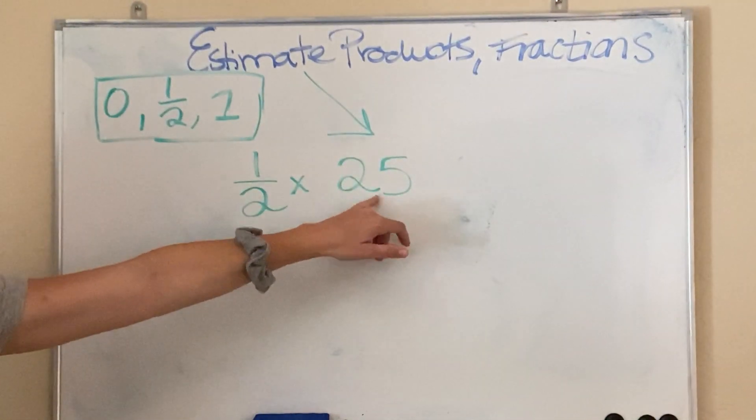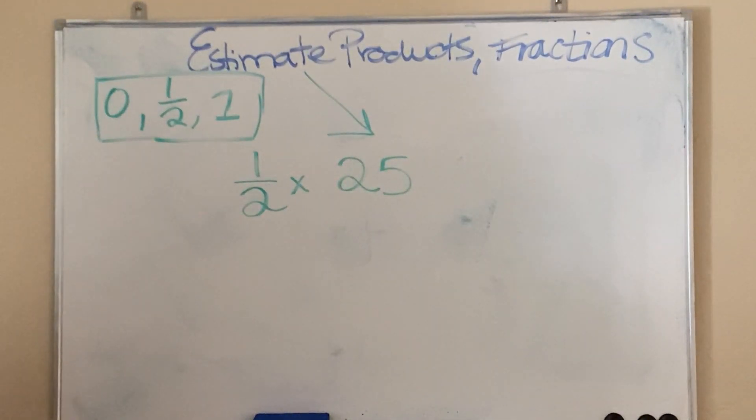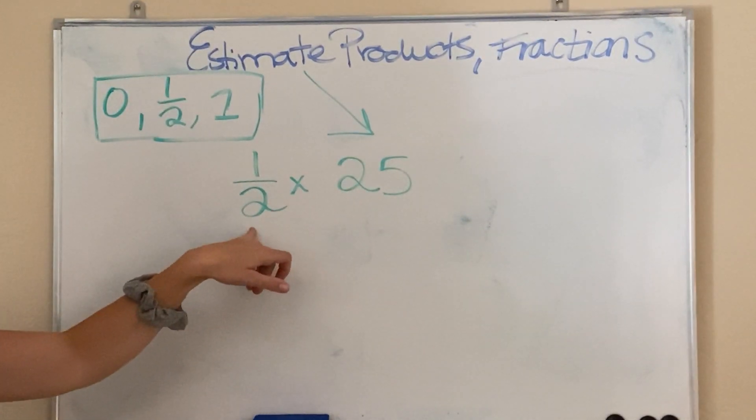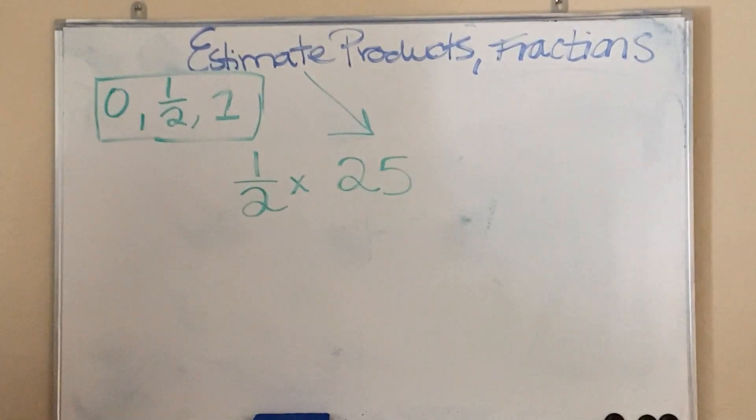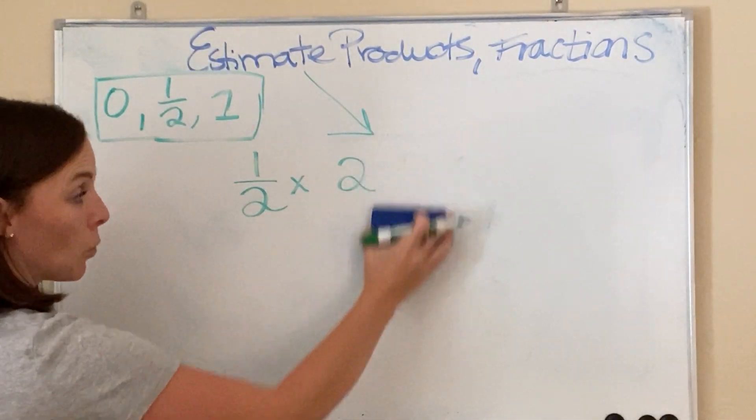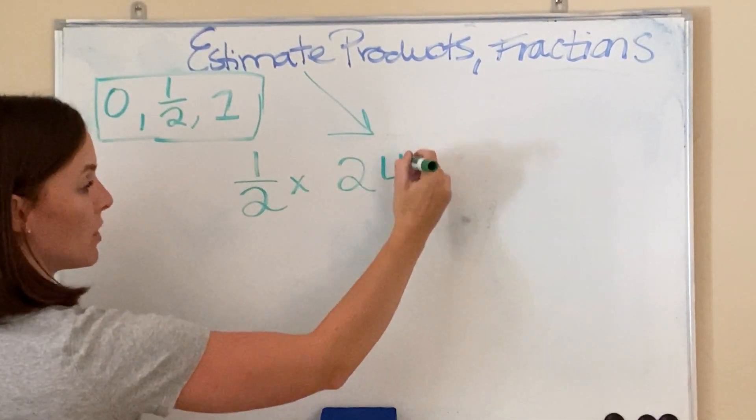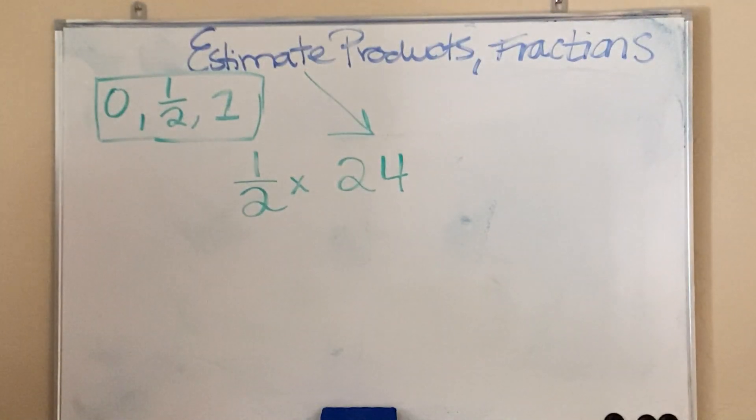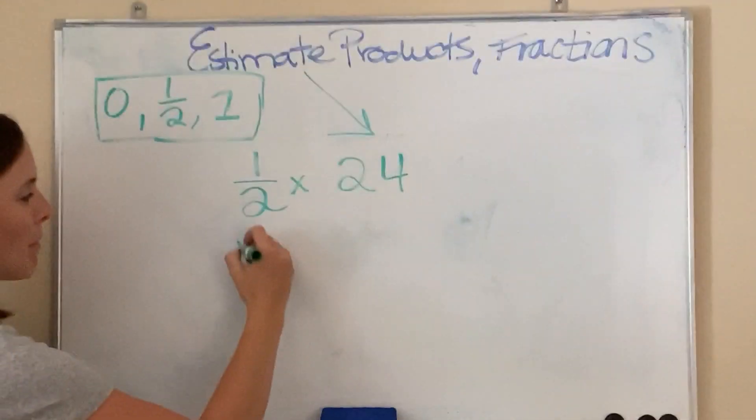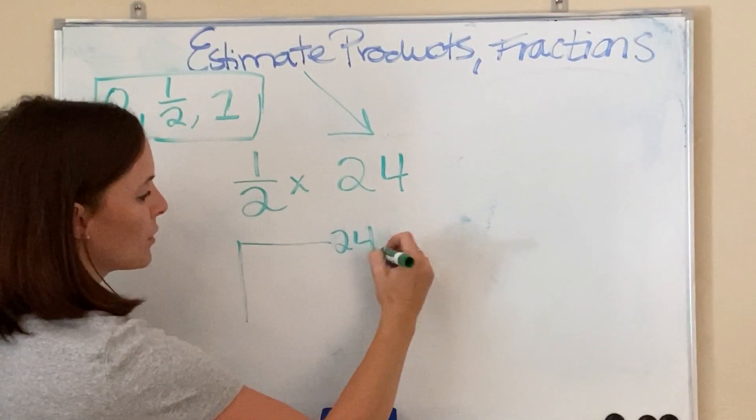So, in this case, we're just going to round this number out here. I want something divisible by 2. 25 divided by 2 is not a fact family, but I know that 24 is. So, I'm going to change this to a 24, and now I can go ahead and draw my model.